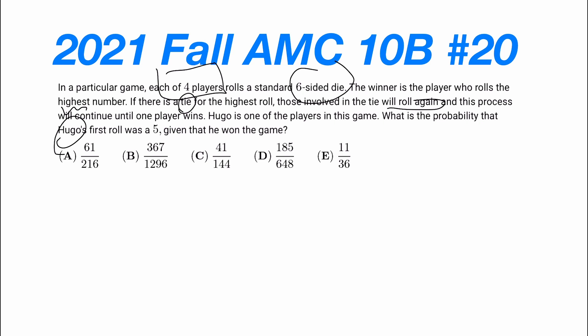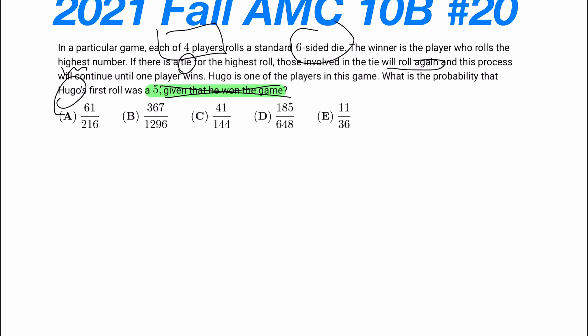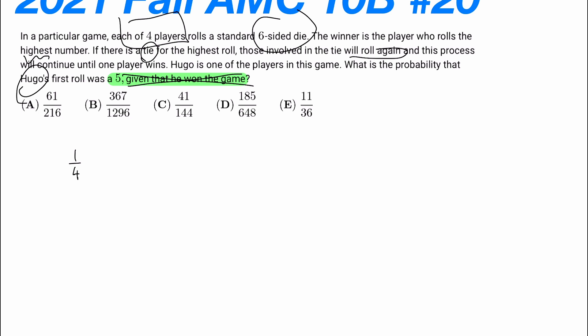Now, if we ignore this condition right here, let's say we just ignore it. Then the probability of him winning the game would be one-fourth, right? Because each player is going to have equal chance of winning it. So we would have one-fourth. Now, if we ignore that condition, we want to find the probability of him winning if he rolled a five. So if he rolled a five, let's think about it.